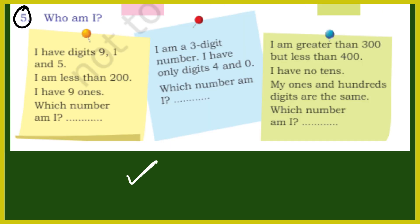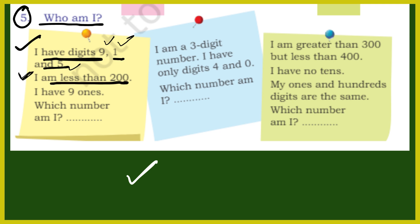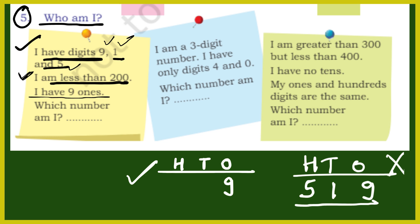यहां कुछ riddles दिये हैं. Who am I? I have digits 9, 1 and 5. I am less than 200, and I have 9 ones. तो तीन ही digit हैं: 9, 1 और 5. 9 तो मैंने ones के नीचे लिख दिया. तो यहां पर 1 लिखेंगे और यहां 5 लिखेंगे — opposite नहीं लिख सकते क्योंकि 519 यह 200 से बड़ा हो जाएगा. Answer: 159.